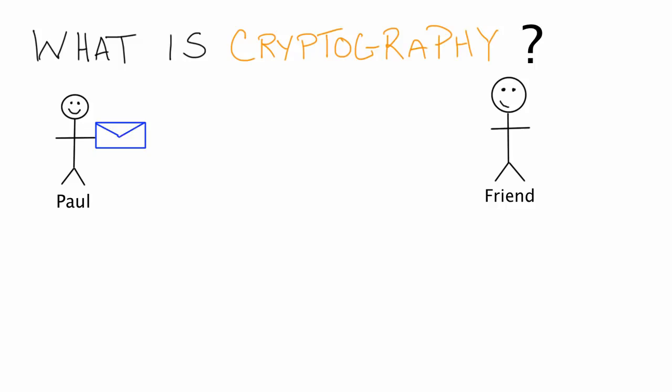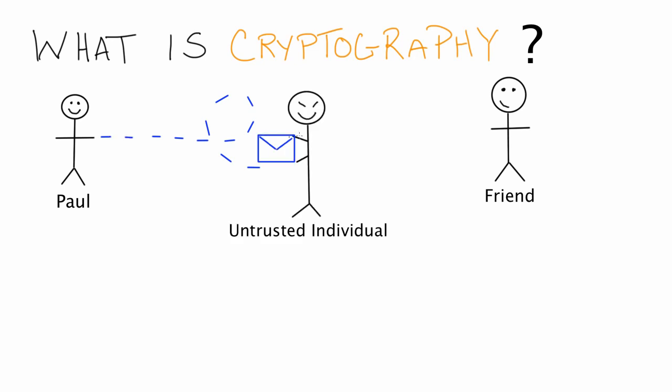Well, if Paul sends his letter to the friend around the world, there's going to be a whole bunch of people that will be handling this letter. So there's a risk that as Paul sends this letter, somewhere along the way, the letter may be intercepted by somebody other than Paul's friend. And if this letter falls into the hands of the wrong person, that person may read the secret message. Sometimes that person will keep the message, or he could take note of that information and then continue to pass the letter on to Paul's friend.